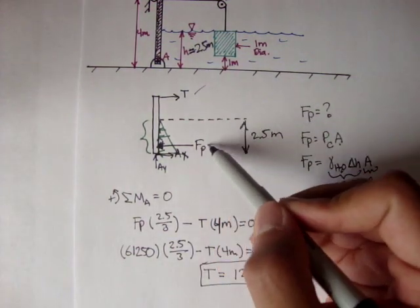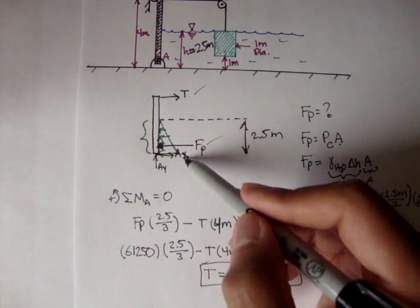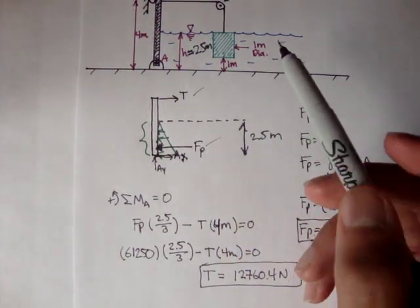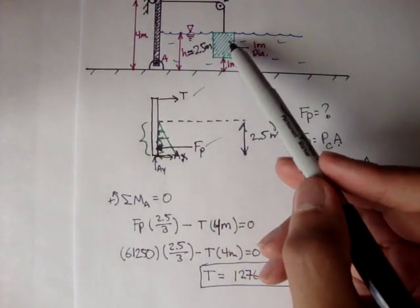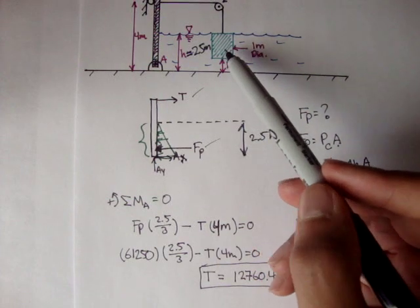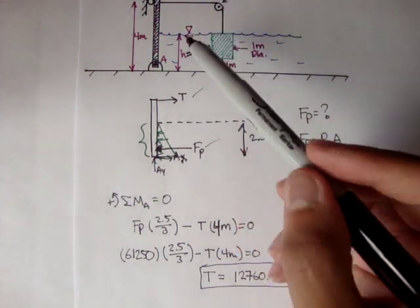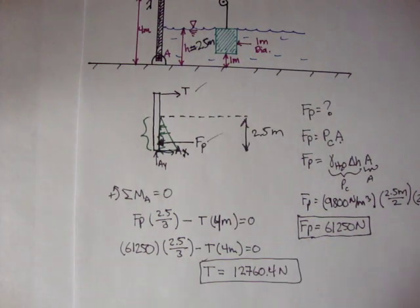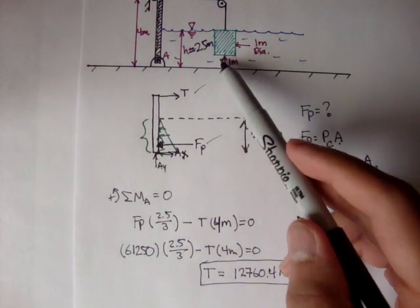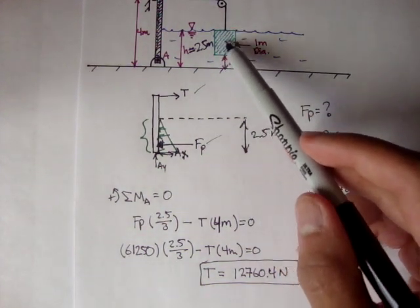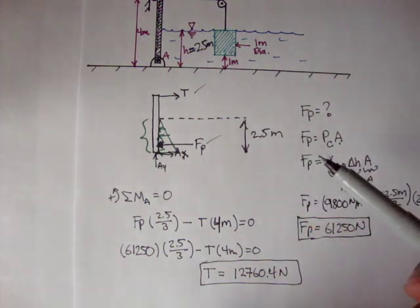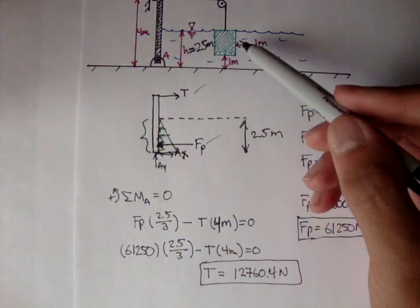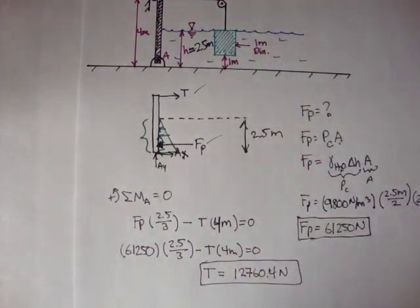So we know the tension, we know the force of the pressure distribution, we don't know Ay, we don't know Ax, but in order to solve for this block's mass, all we need to know is the tension in this cable, which we already found. And we can actually do that in the next video. So in the next video we'll try to figure out the mass of this block, we'll use the concepts of buoyant force, weights, and tensions to figure that out.